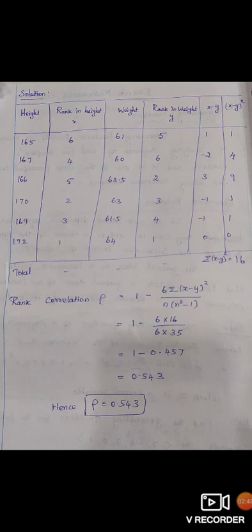Here we consider rank in height is the sixth rank. So the fifth column is x minus y.